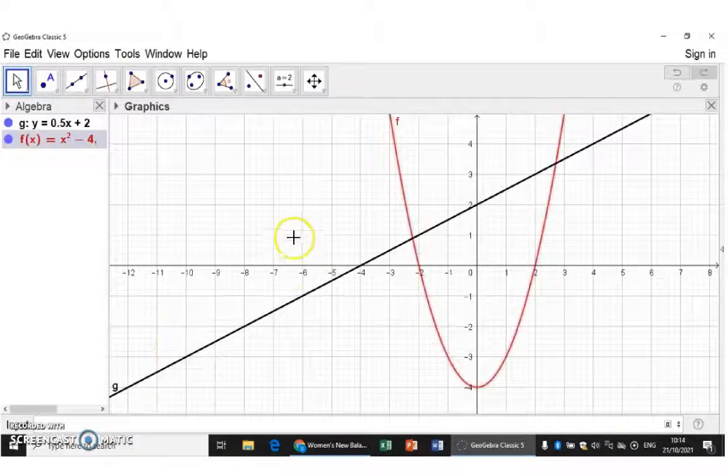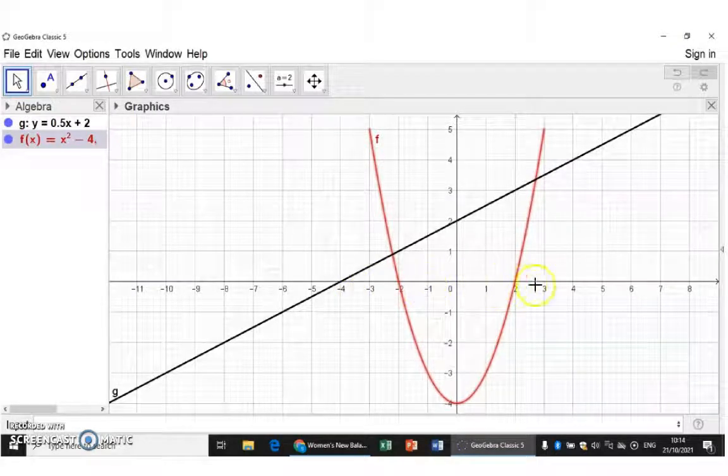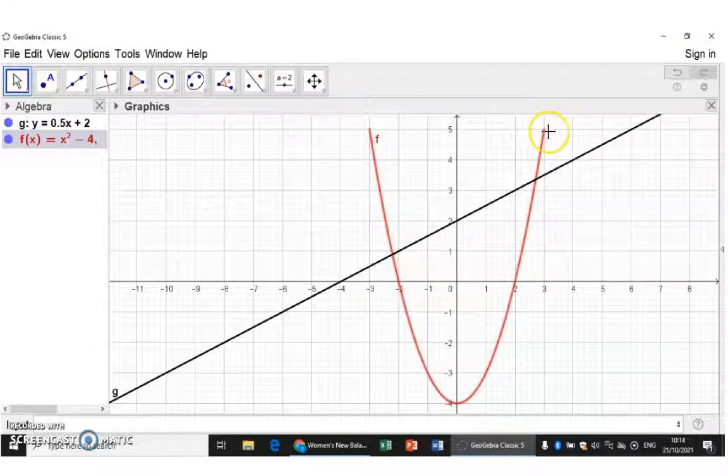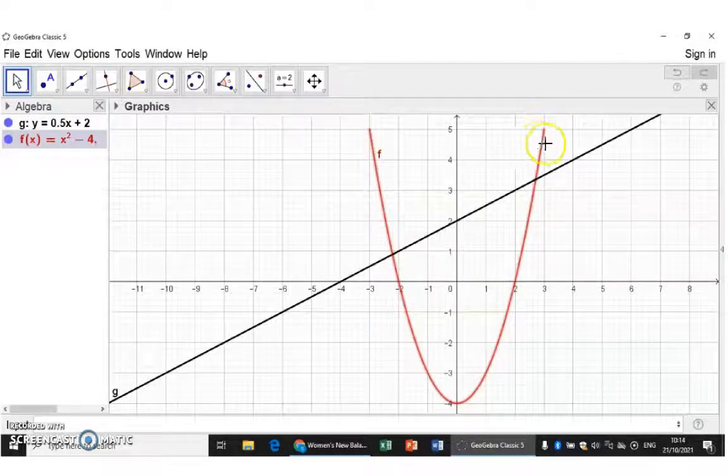So here we now have a parabola that is only drawn from minus 3 to 3. You can see there that it ends. So here we can now add arrow points.